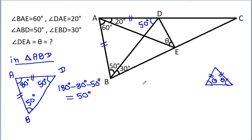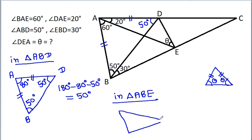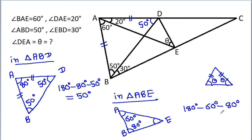This angle is 50 degrees. In triangle ABE, angle BAE is 60 degrees and angle BAD is 80 degrees. So angle ABE will be 180 minus 80 minus 60, which gives us 40 degrees. So this angle is 40 degrees.